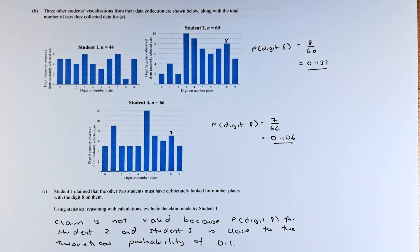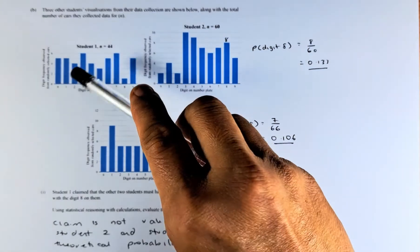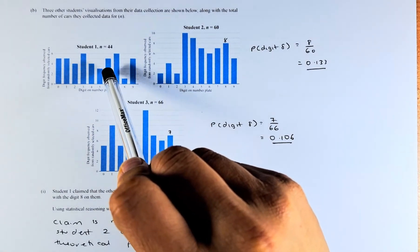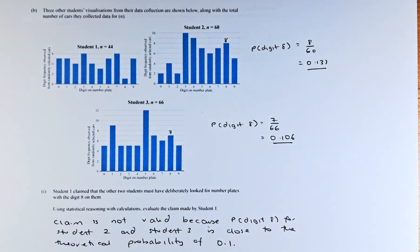Three other student visualizations for the data collection are shown below, along with the total number of cars they collected data for N. So there are three other students. Student 1, Student 2, Student 3. Student 1 took a sample of 44. Student 2 took a sample of 60. And Student 3 took a sample of 66.